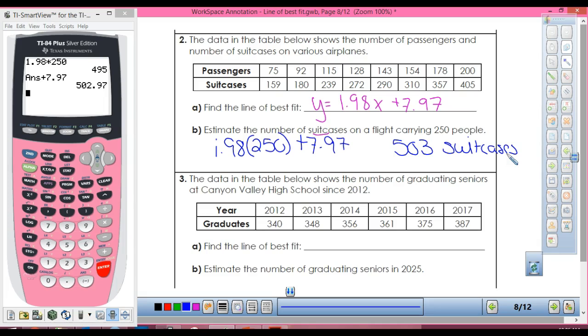Now we're not going to do number three but I want you to take a look at number three right now. Anytime you're dealing with years you're going to enter them into your list a little bit differently. This says years since 2012. So if I'm going years since 2012, 2012 is how many years since 2012? Zero. So I would enter this as 0. 2013 would be what? 1. This would be 3, 4, and 5. And these are the numbers that you would enter into your L1. Does that make sense?